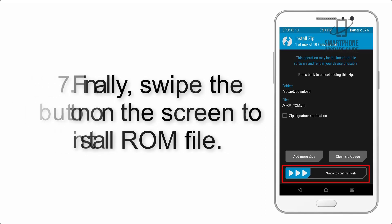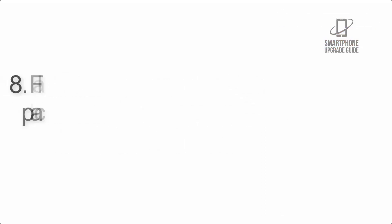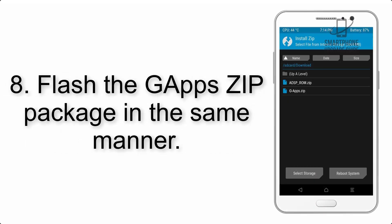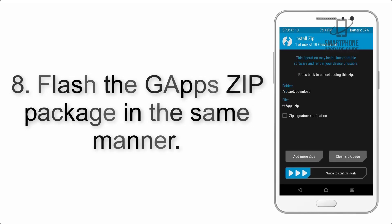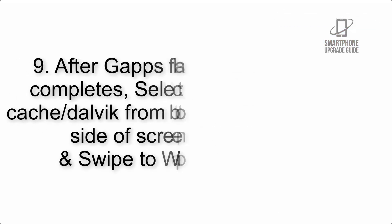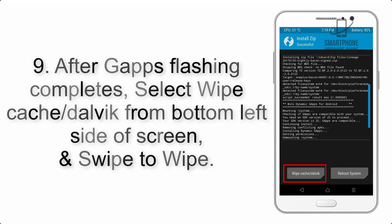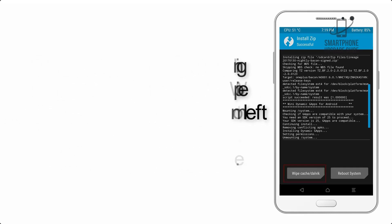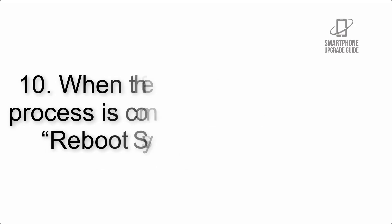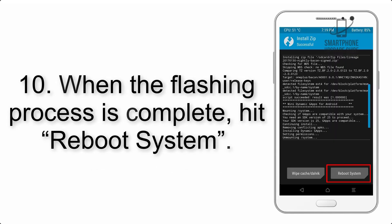Step 7: Swipe the button on the screen to install the ROM file. Step 8: Flash the GApps zip package in the same manner. Step 9: After GApps flashing completes, select Wipe Cache and Dalvik from the bottom left side of the screen and swipe to wipe.